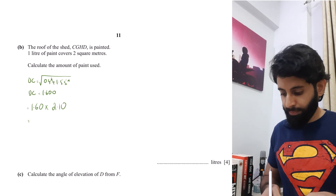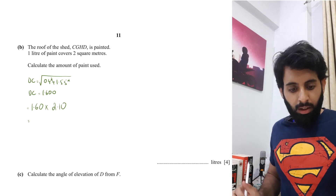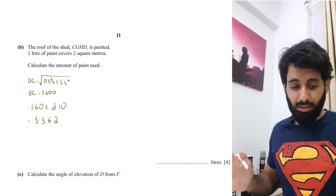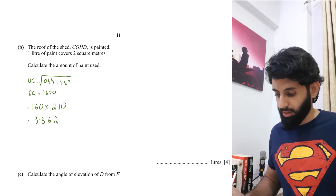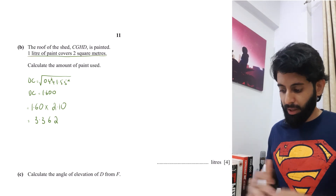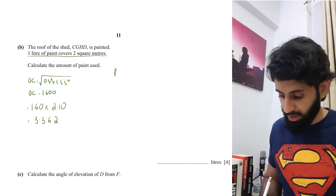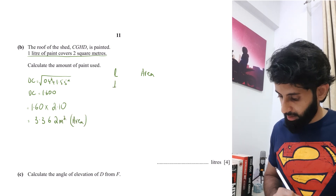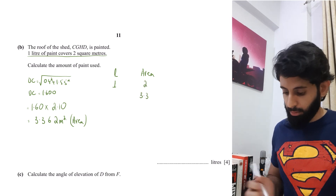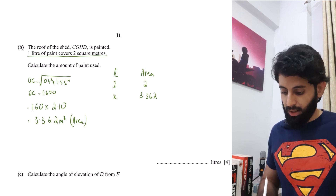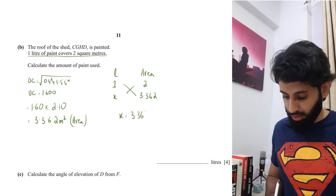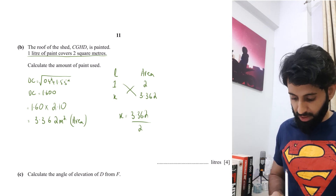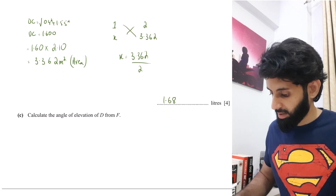The roof area = 1.600 × 2.10 = 3.3616, which I'll take as 3.362. One litre of paint covers 2 square metres, so setting up the proportion: x litres is to 3.362 m² as 1 litre is to 2 m². Cross-multiplying: x = 3.362 ÷ 2 = 1.681, which rounded to three significant figures is 1.68 litres.